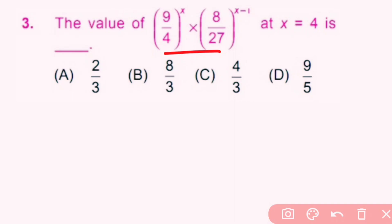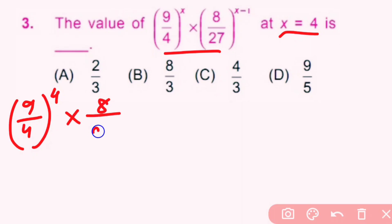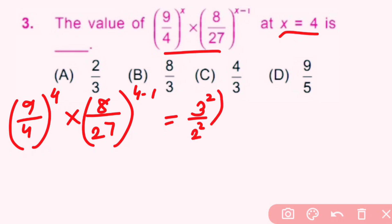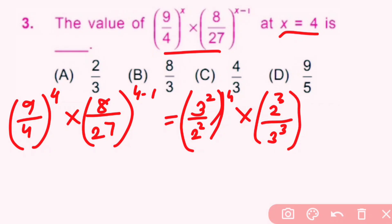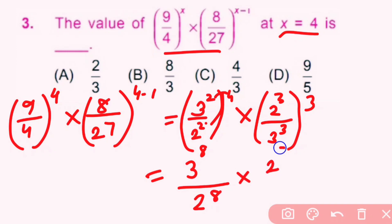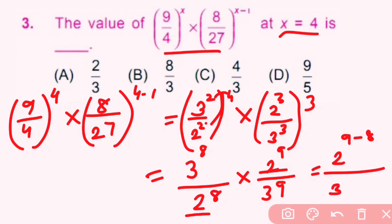Question number 3: the value of this at x equal to 4 is dash. We put x equal to 4: (9/4) raised to 4 into (8/27) raised to (4 minus 1). Here 3 squared is 9, 2 squared is 4, 2 cubed is 8, and 3 cubed is 27. So 3 raised to (2 times 4) is 8, and 2 raised to (2 times 4) is 8, into 2 raised to 9 by 3 raised to 9. Subtracting powers: 2 raised to (9 minus 8) over 3 raised to (9 minus 8), giving 2 by 3. Option A is correct.